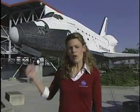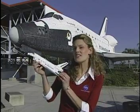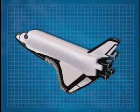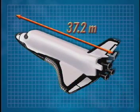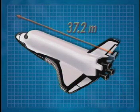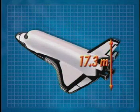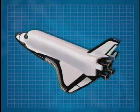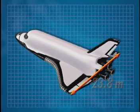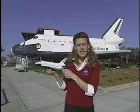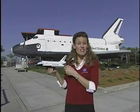Are you still having trouble trying to understand scaling? Let's look at another example, this time using a scale model. Right behind me is a replica of the space shuttle, and this right here is a scale model of the space shuttle. The actual space shuttle has a length of 37.2 meters, a height of 17.3 meters, and a width or wingspan of 23.8 meters. This shuttle model is a 1:100 scale of the actual space shuttle.